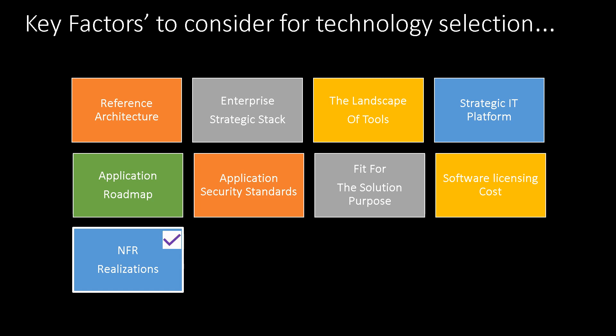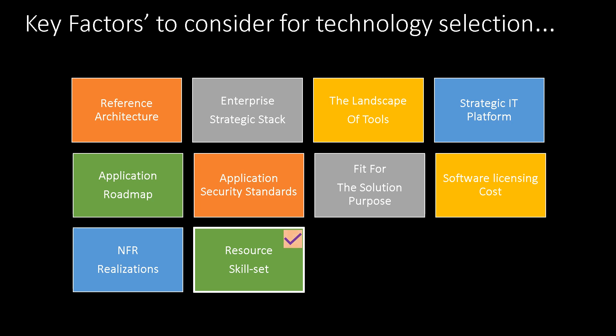Do remember, the technology you select should give full control over supporting all the NFRs that apply to your solution. Resource skill set plays a vital role in choosing technology. When choosing a technology, make sure there are enough developers in the market or on your team with the skills you require. If there are two different frameworks that could both meet your needs — for example, Angular and React.js — then you should prefer the one in which your team has strong expertise. Otherwise, you would end up spending time and cost developing new skills as a learning curve.